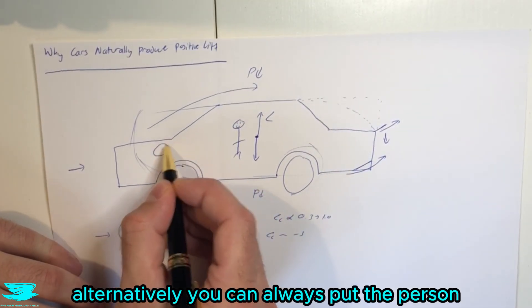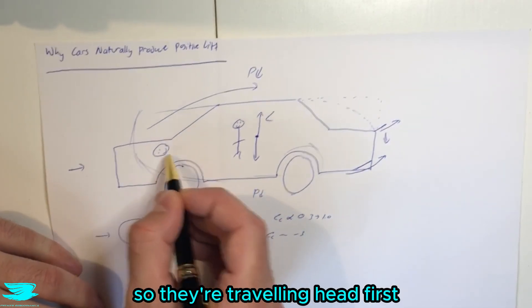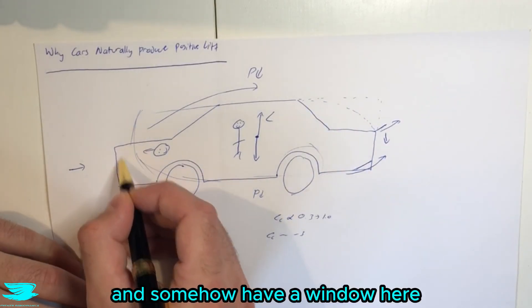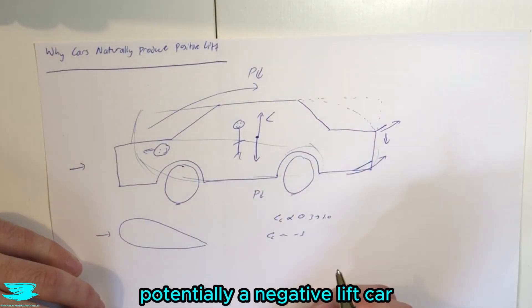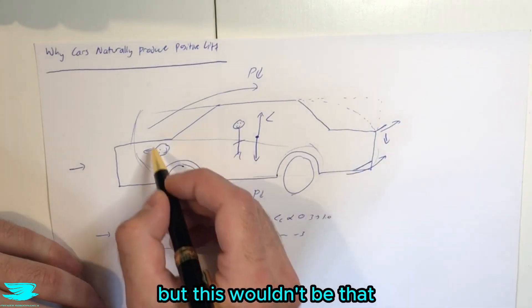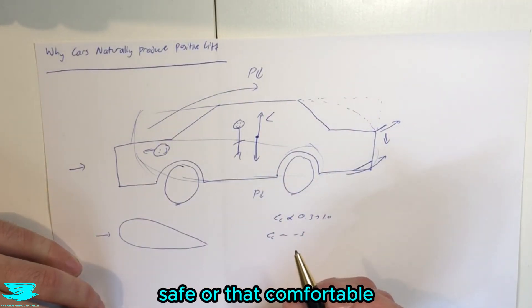Alternatively, you can always put the person so they're traveling headfirst, and somehow have a window here. And then you can sort of cut off this bit here. And then you can have potentially a negative lift car quite easily. But this wouldn't be that safe or that comfortable, I guess.